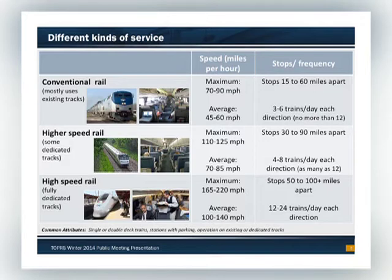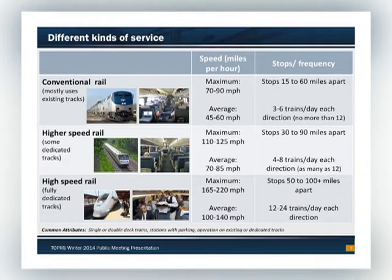These are the types of service we're looking at. First, conventional passenger rail service — Amtrak-type service — with speeds up to about 90 miles an hour and stations about 60 miles apart. Also looking at higher speed service, up to 125 miles an hour, which would use some existing rails but also some dedicated tracks. And then also looking at true high speed, which would be fully dedicated, grade-separated tracks with more frequent trains and stations farther apart.